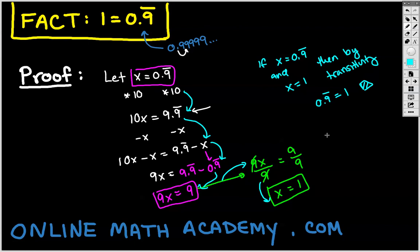The transitive property is: if a equals b and a equals c, then b is equal to c. So if a is equal to one thing and it's also equal to the other, these two are equal. And that's the only thing you really need to do to finish up the proof. So it is a fact.